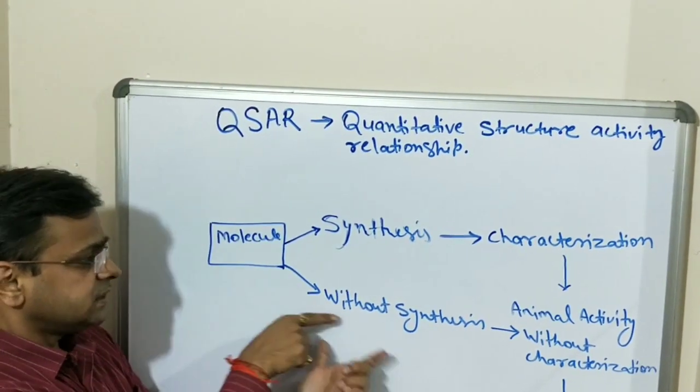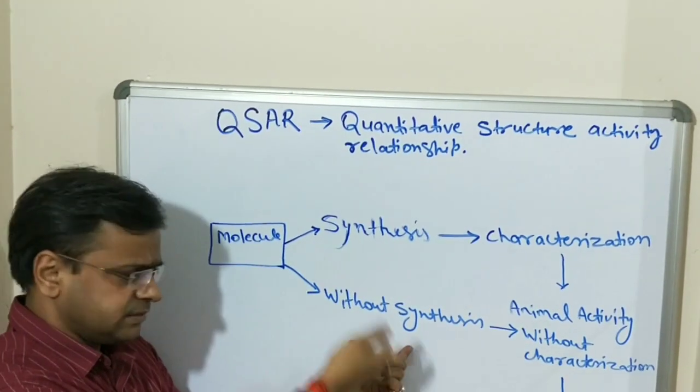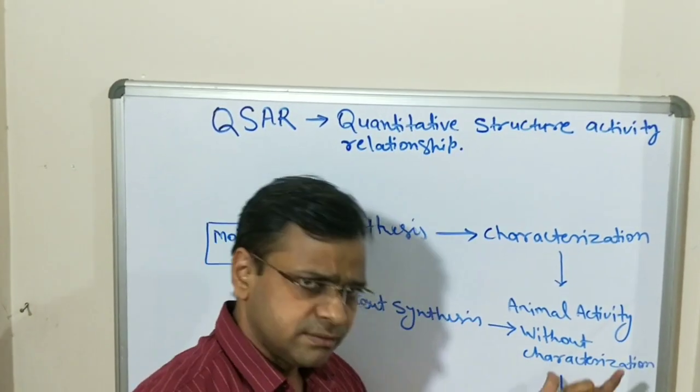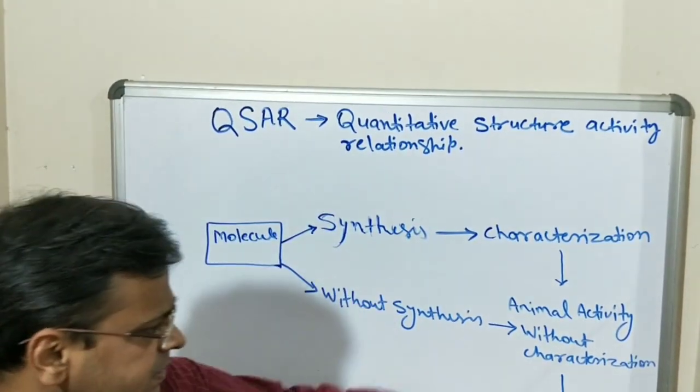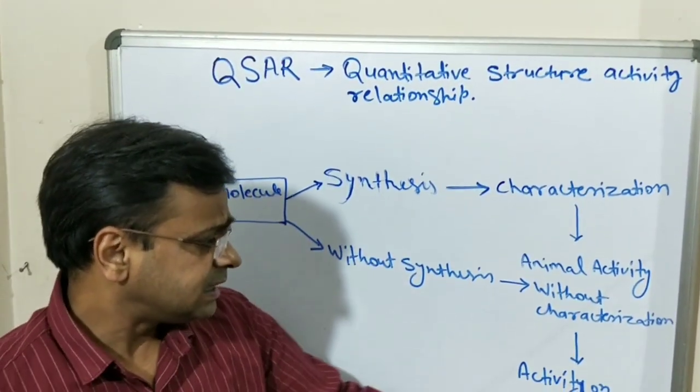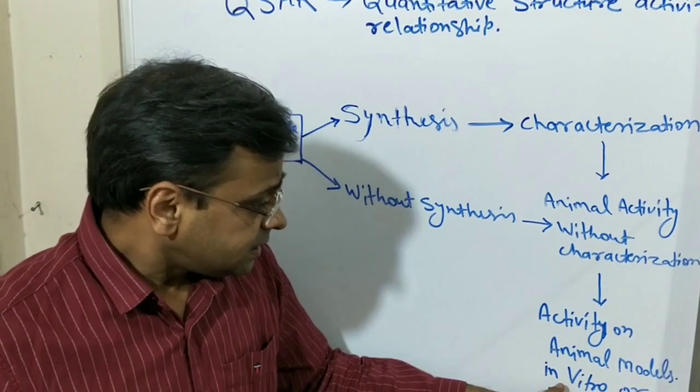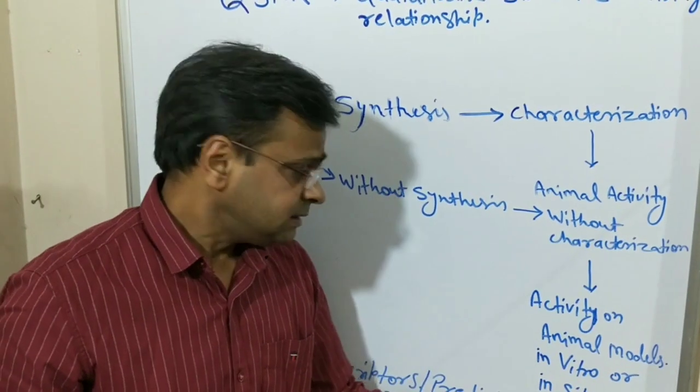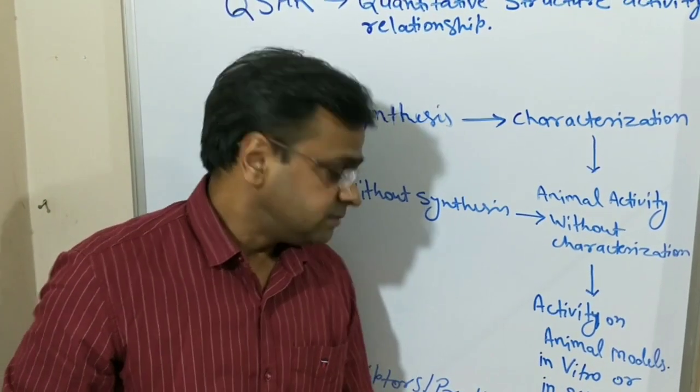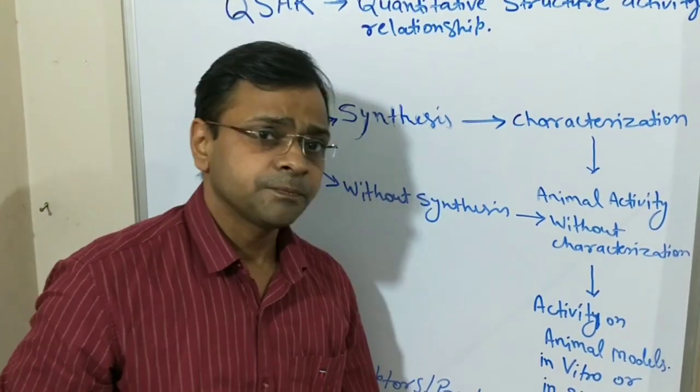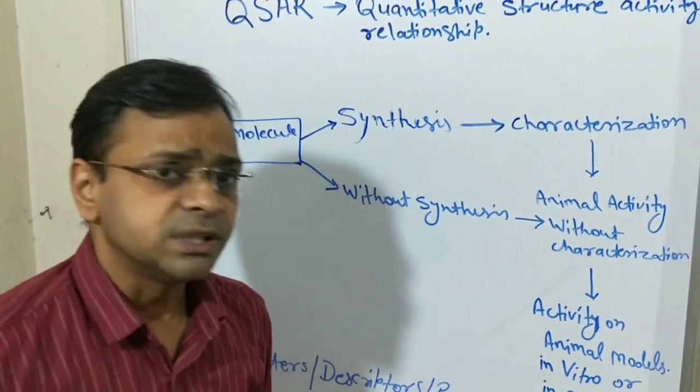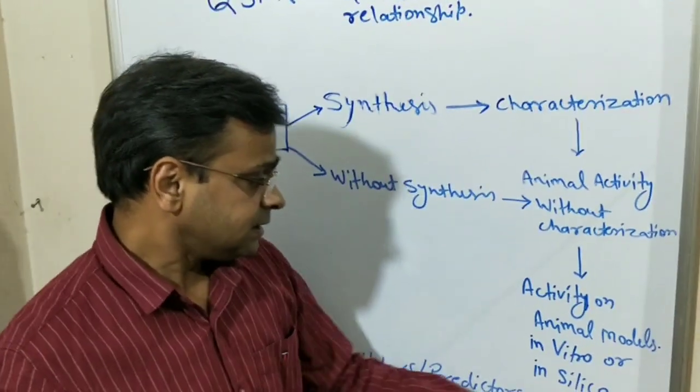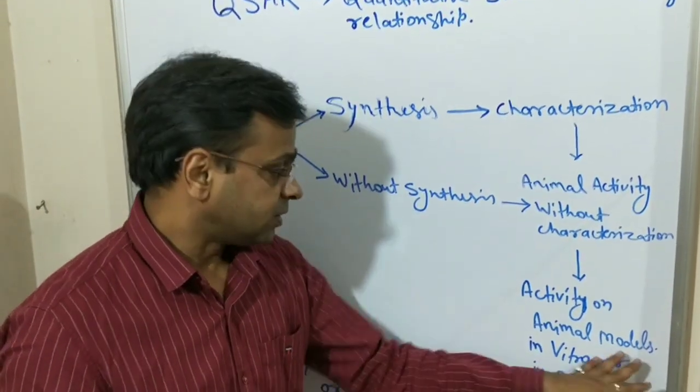The second method is without synthesis or after synthesis, without characterization or after characterization, we perform activity on animal models in vitro or in silico. In silico means applying some devices which use silicon, means computer, means IC-containing devices. So these are in silico models.